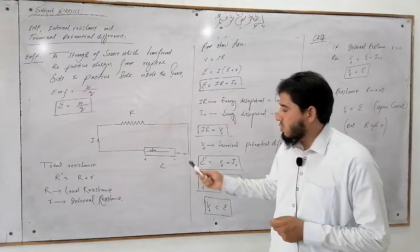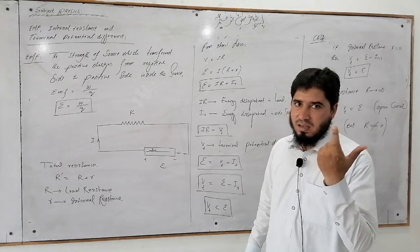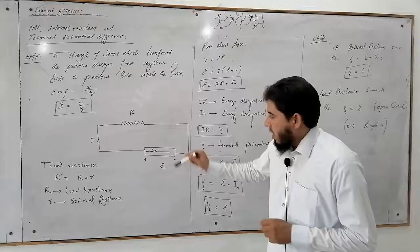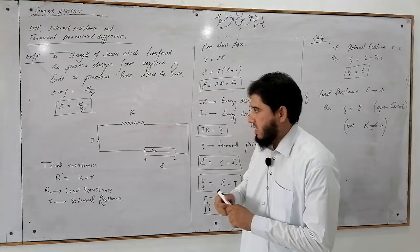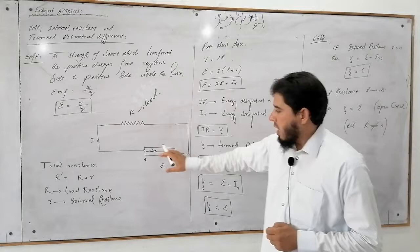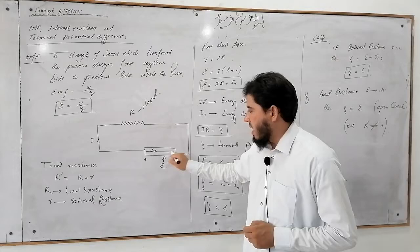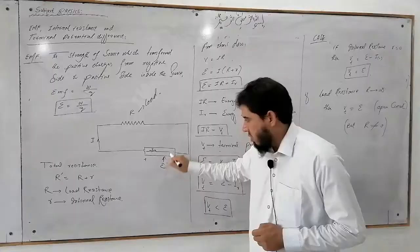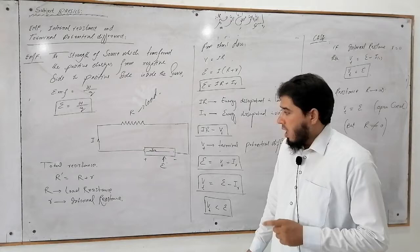Aur iske saath-saath jo source aapne connect kiya hai, uske andar bhi kuch resistance hai ya nahin. Dobara — source of electromotive force maine connect kiya wire ke saath, circuit maine banaya, ye load resistance hai. Yahan par ye hai electromotive force, ye hai source of electromotive force, jisne transfer kiye positive charges negative side se positive side ki taraf — this is called electromotive force.